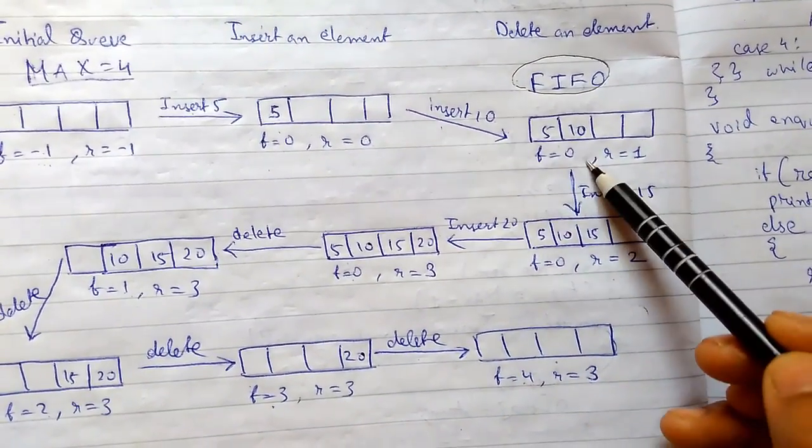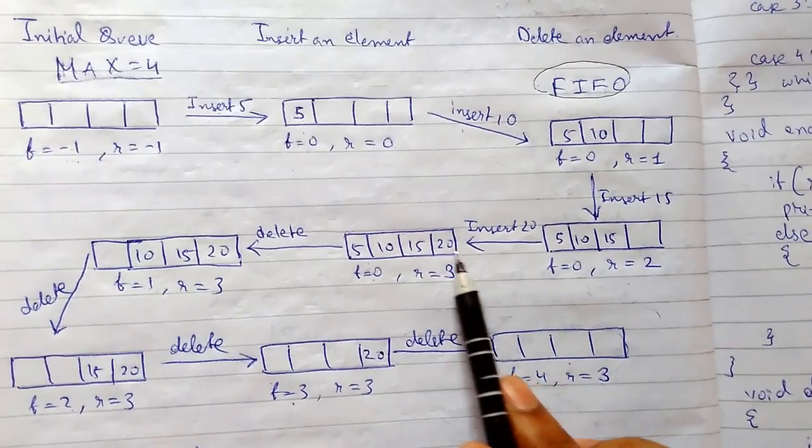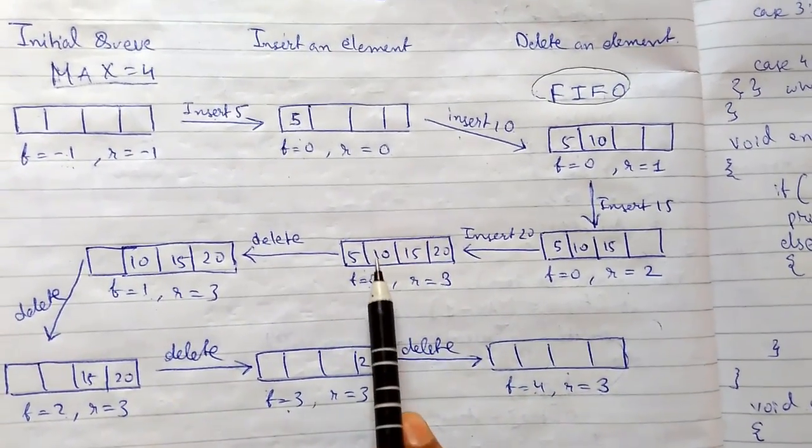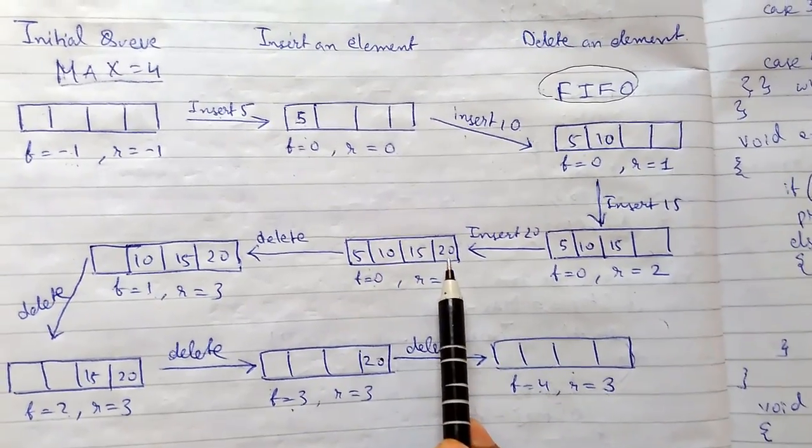The element has been inserted, or we can say that rear has been upgraded and element has been inserted. It is pointing here. Again we are inserting here, so rear has been updated, element is inserted. Now you have inserted here, you see that the size has been full, so the rear is 3.